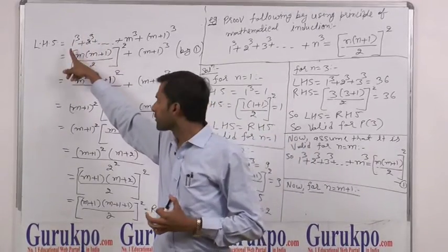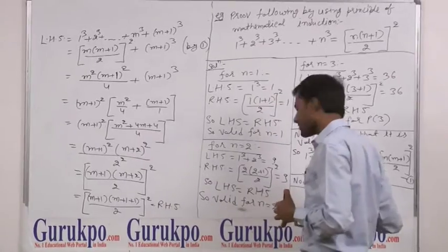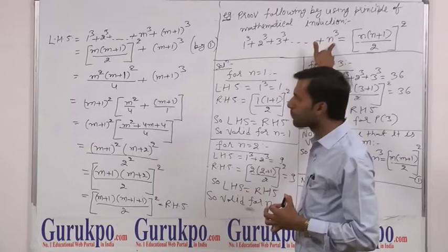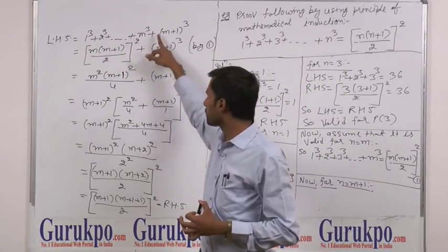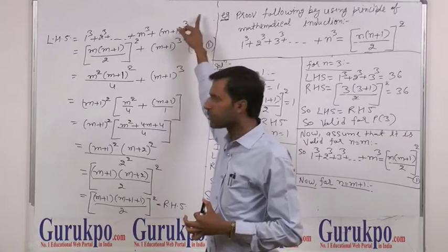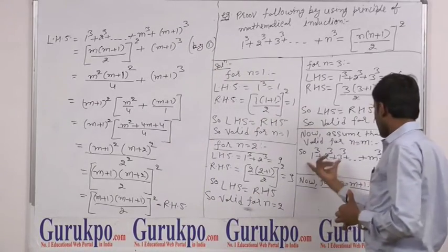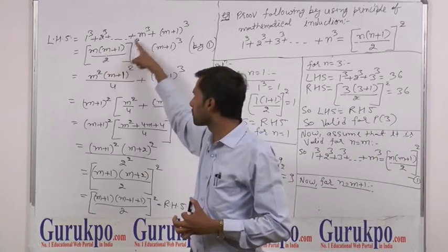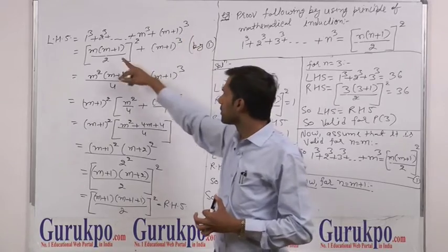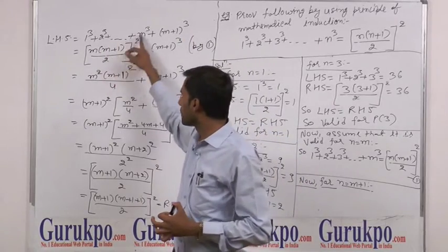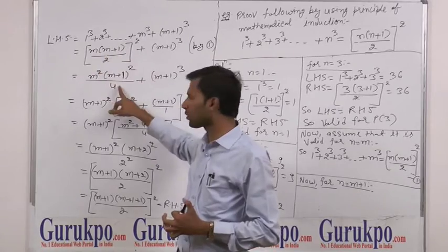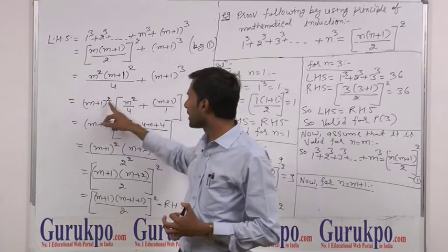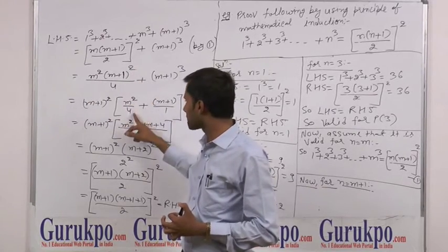Now in step number 5, we have to prove it for m plus 1. This is our LHS, equal to the sum up to m, and for m plus 1 we have 1 cube plus ... plus m cube plus (m+1) whole cube. By equation 1, this expression equals m(m+1)/2 whole square plus (m+1) cube. Now we expand this: m squared times (m+1) whole squared over 4, plus (m+1) whole cube. The common factor is (m+1) whole squared.